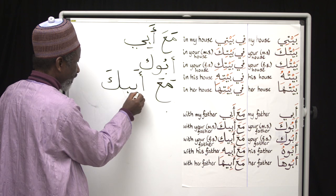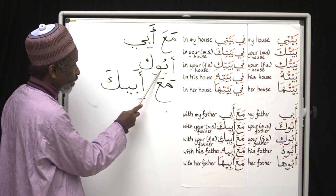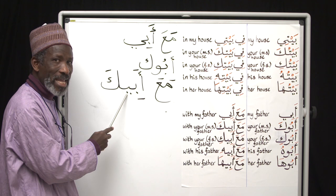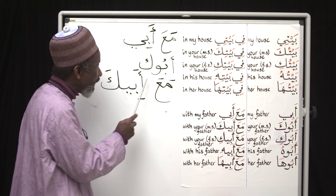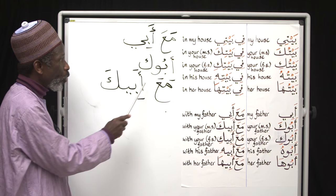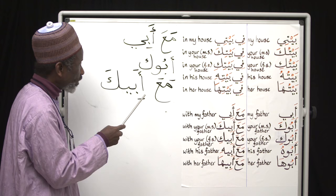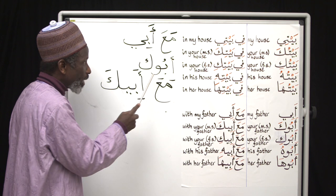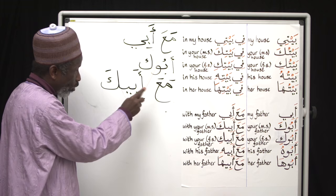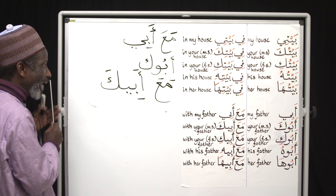So without preposition: abuka. With preposition: maa abiika. The waw is changed to ya because of the preposition. And because of the ya — which has an 'ee' sound — that forces the damma 'u' of the preceding syllable to become a kasra. So maa abiika: 'u' becomes 'i'. Two things are happening: the waw changes to ya, and the vowel of 'ab' also changes to match the ya.